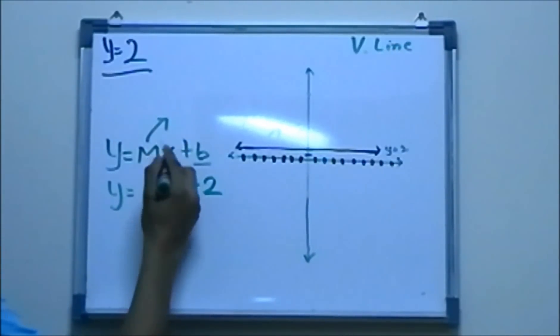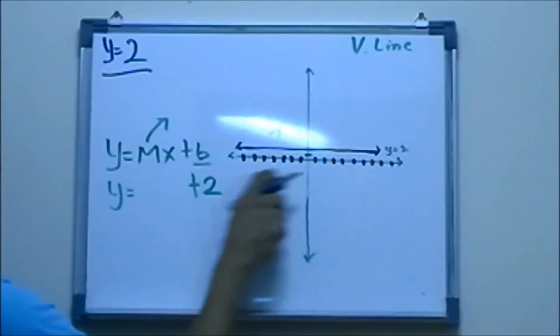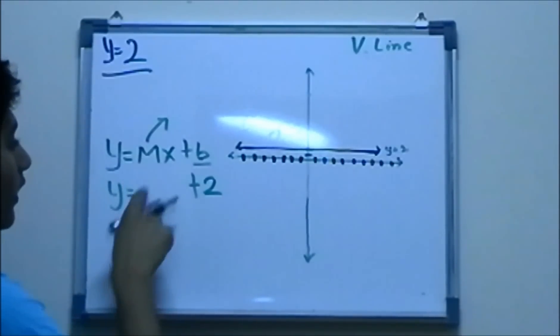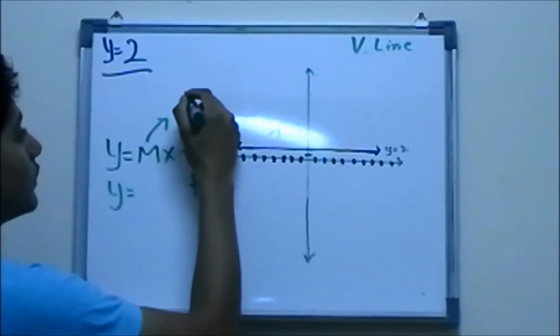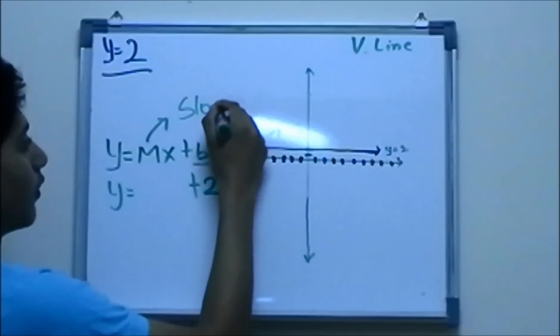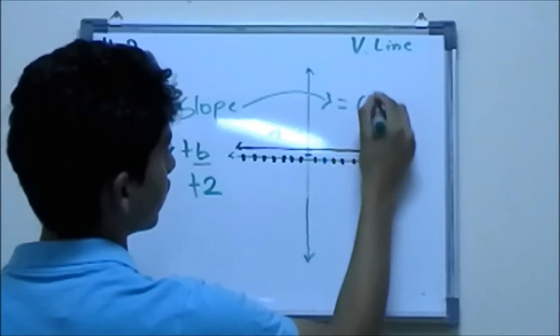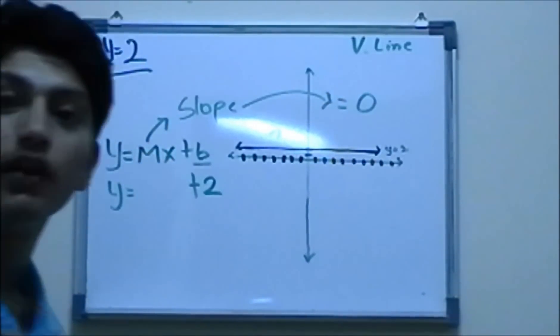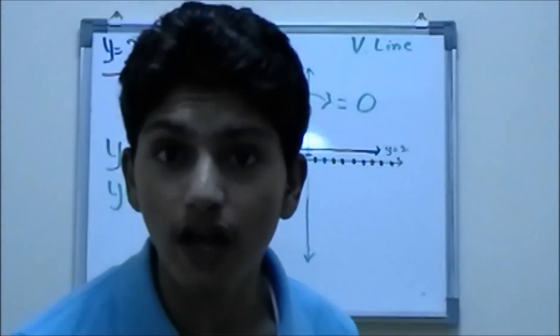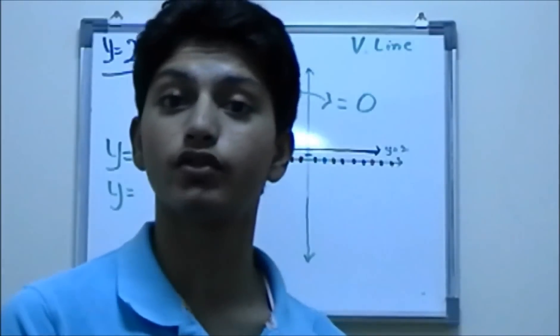And for any x value, this is the x value which is on the x-axis. But let's go to m. m is slope. Slope of any horizontal line is always and always equal to zero. Slope of any horizontal line is always, always, always equal to zero.